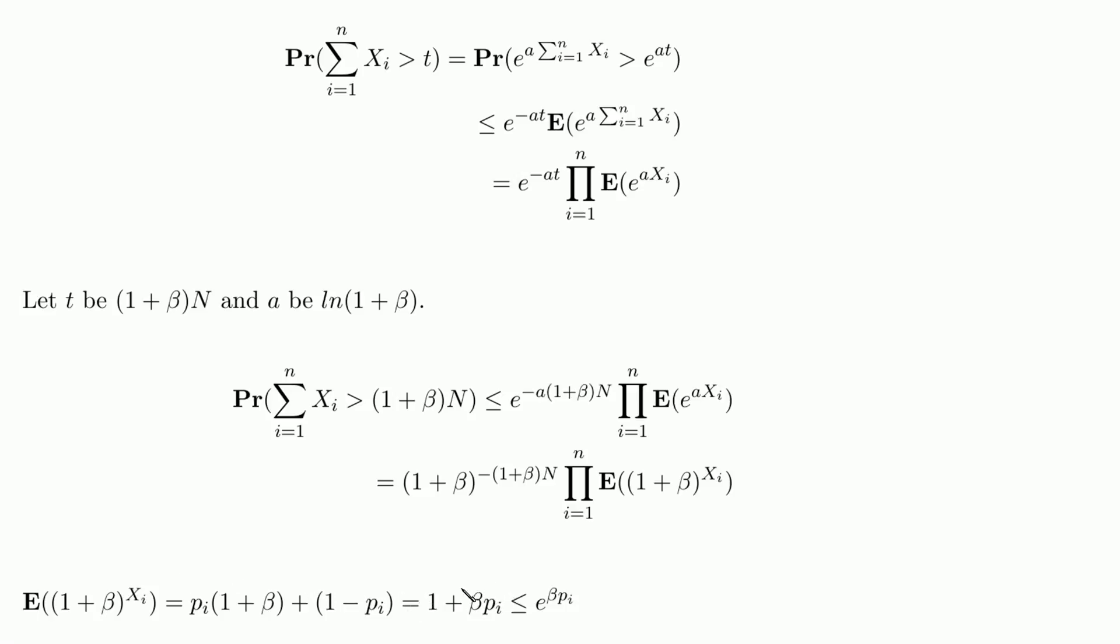So this will be 1 plus beta times pi, and this will be less or equal to e to the power of beta times pi.